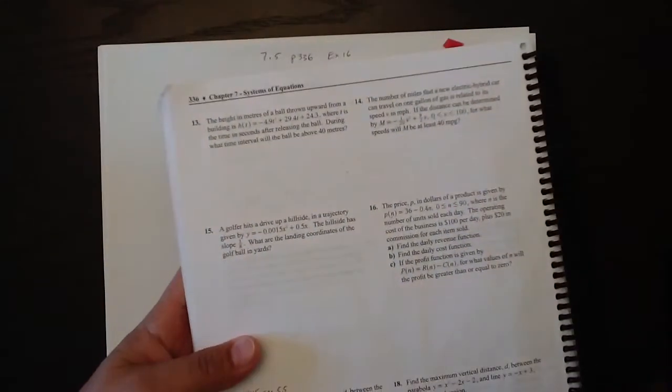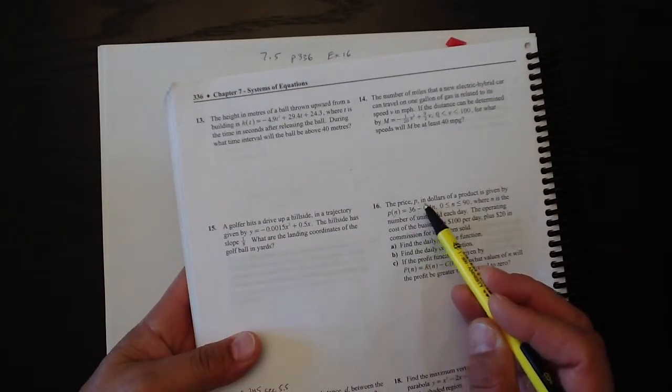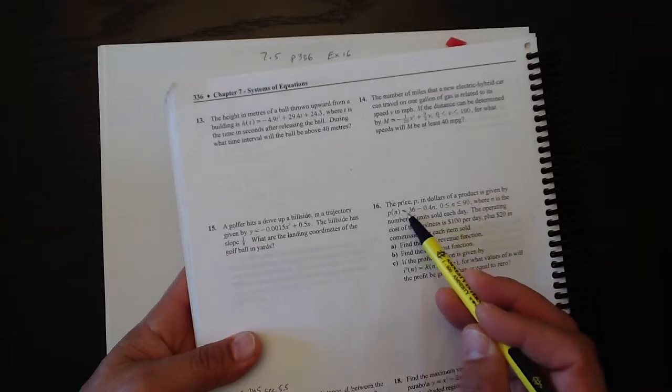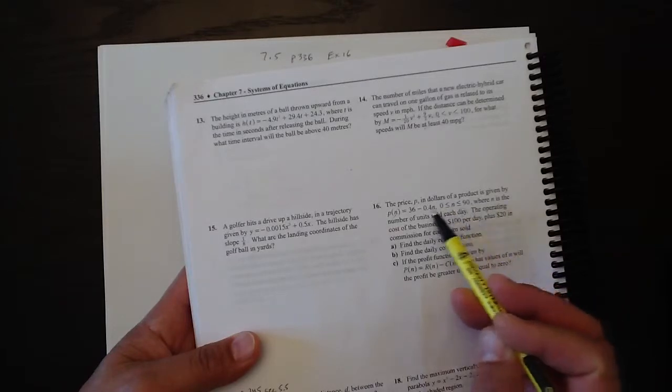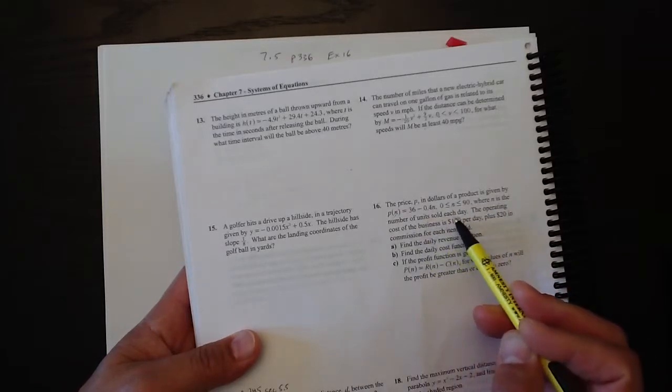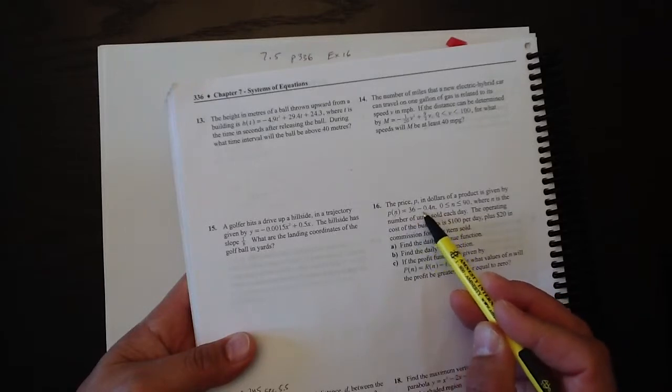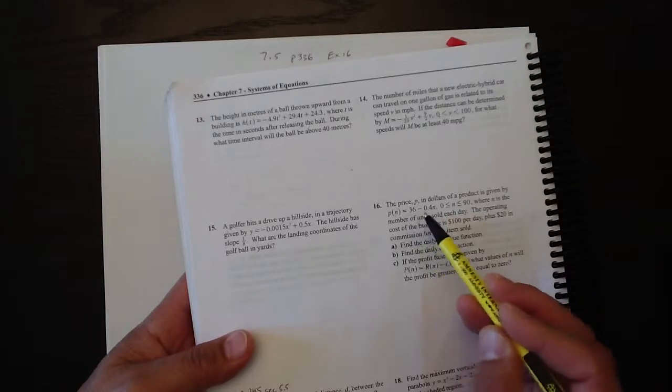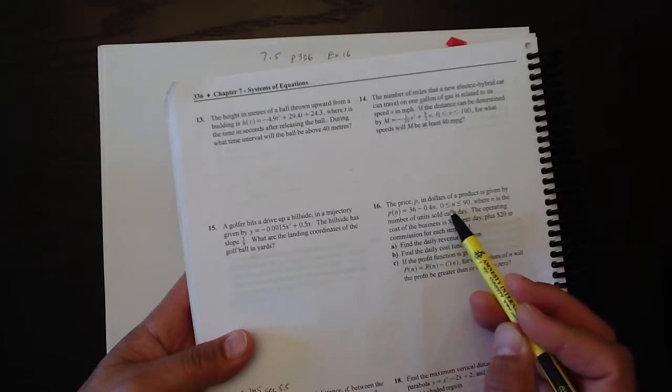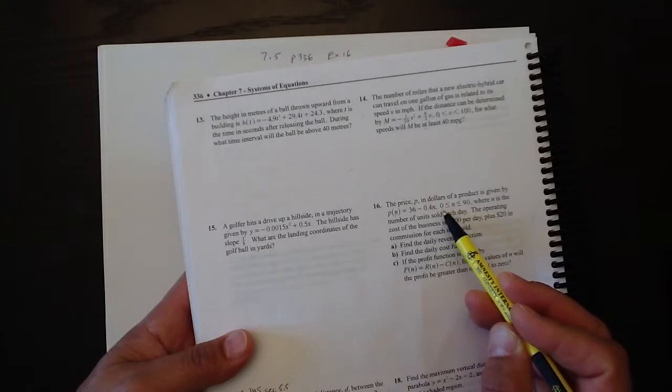Let's define a few things. It talks about the price is given by this. In other words, price is a function of the number of units sold. That's what n is. n is the number of units sold each day. So the more we sell, the lower the price has to be because we've got a negative n here. There's some limits to the number that you can sell. You can only sell 90 a day at tops, and you can't sell less than zero, obviously.